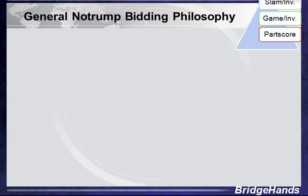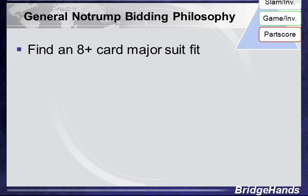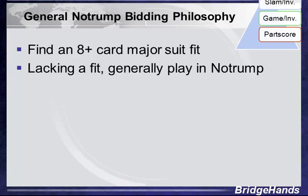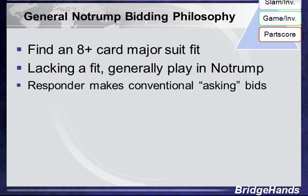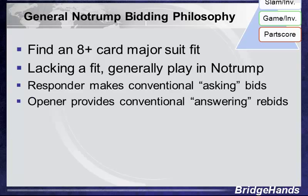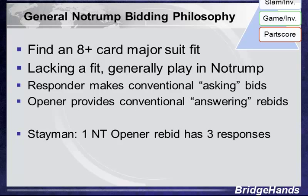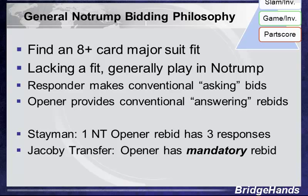What's the bidding philosophy as responder after partner opens one no trump? It all begins with a fit — we try to find an eight-card or longer suit fit. Lacking a fit, we generally steer towards no trump using conventional calls. After partner opens one no trump and responder bids two clubs, the opener has a series of responses disclosing major suit holdings. But unlike Stayman, the Jacoby transfer bid demands a mandatory rebid of a specific suit.